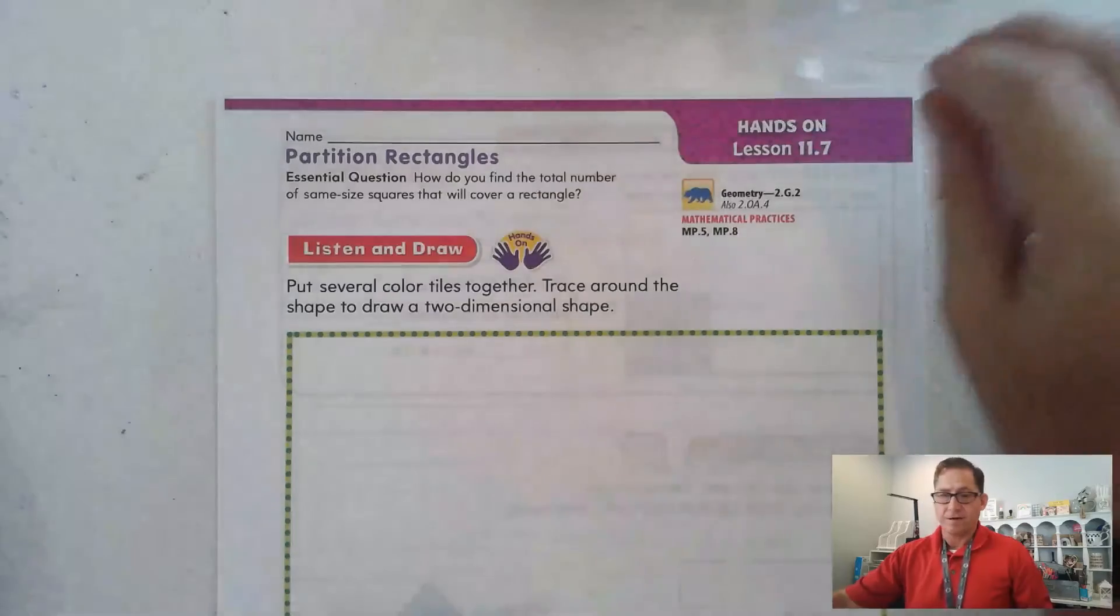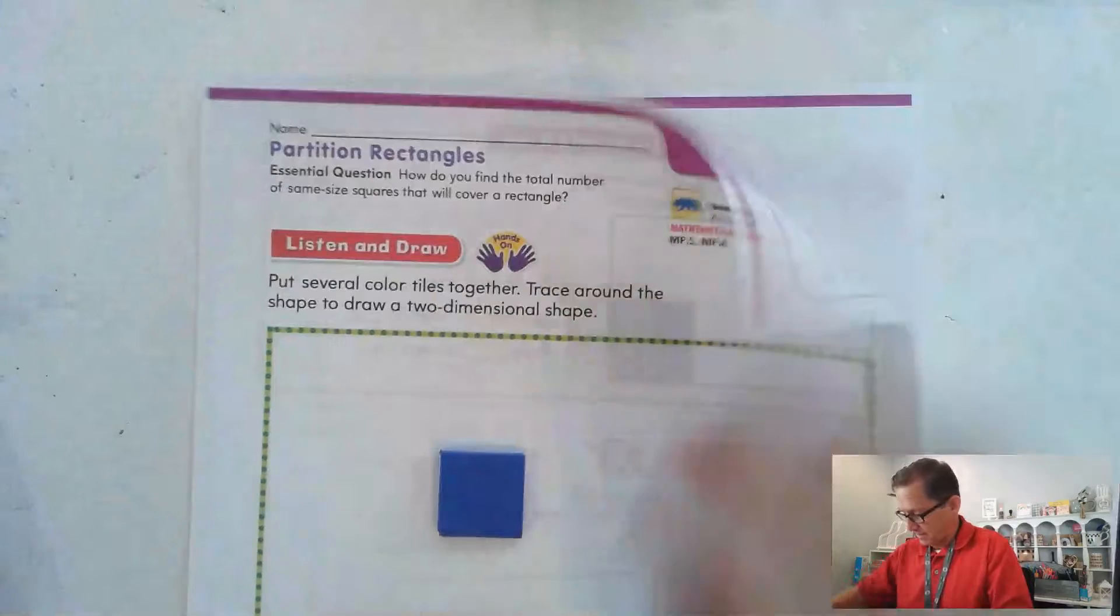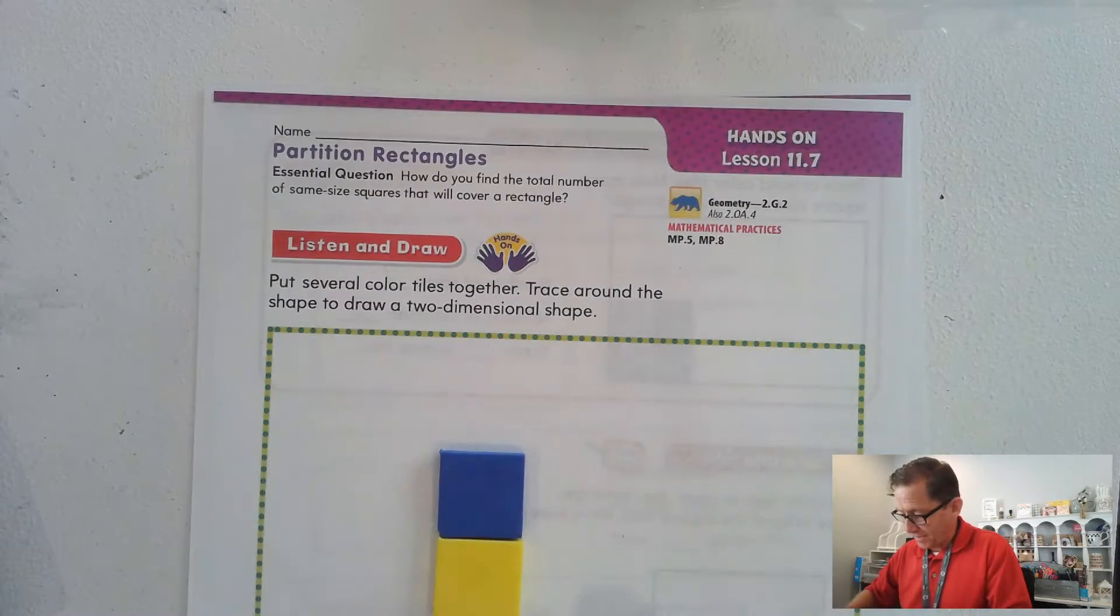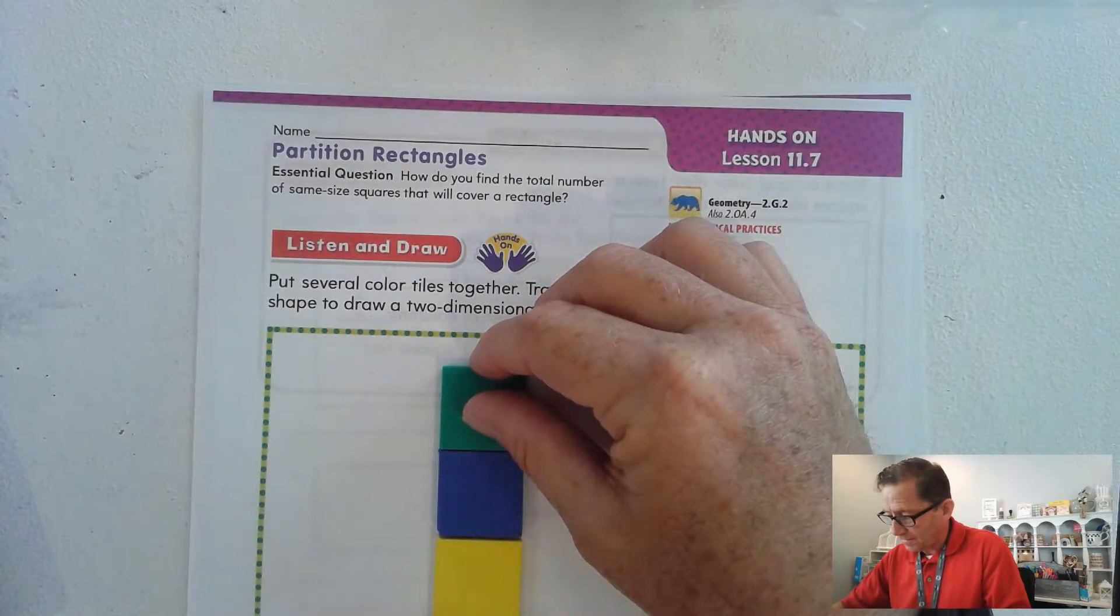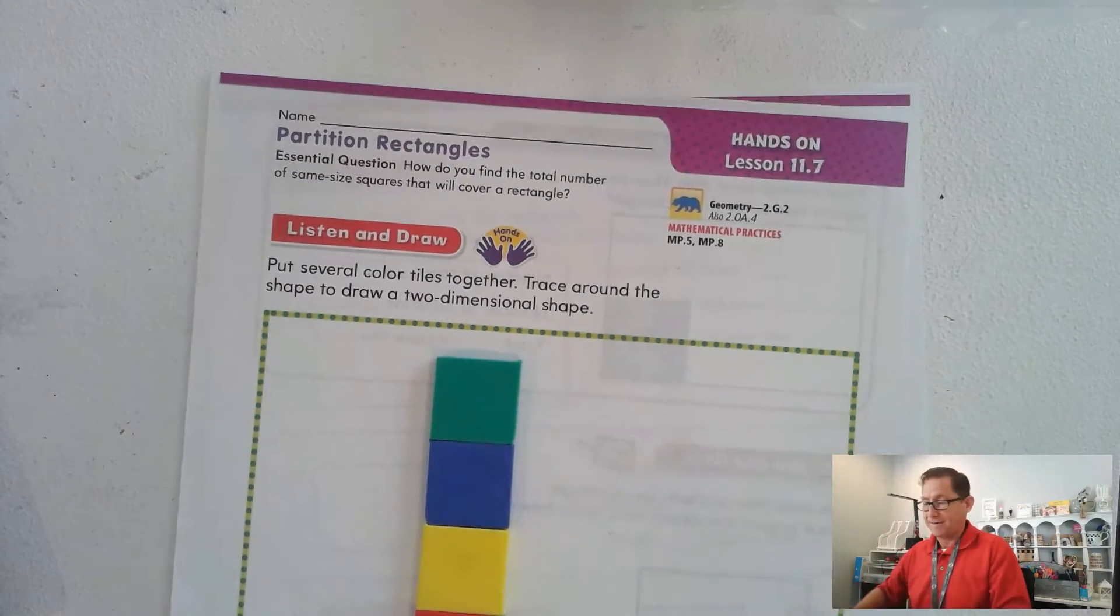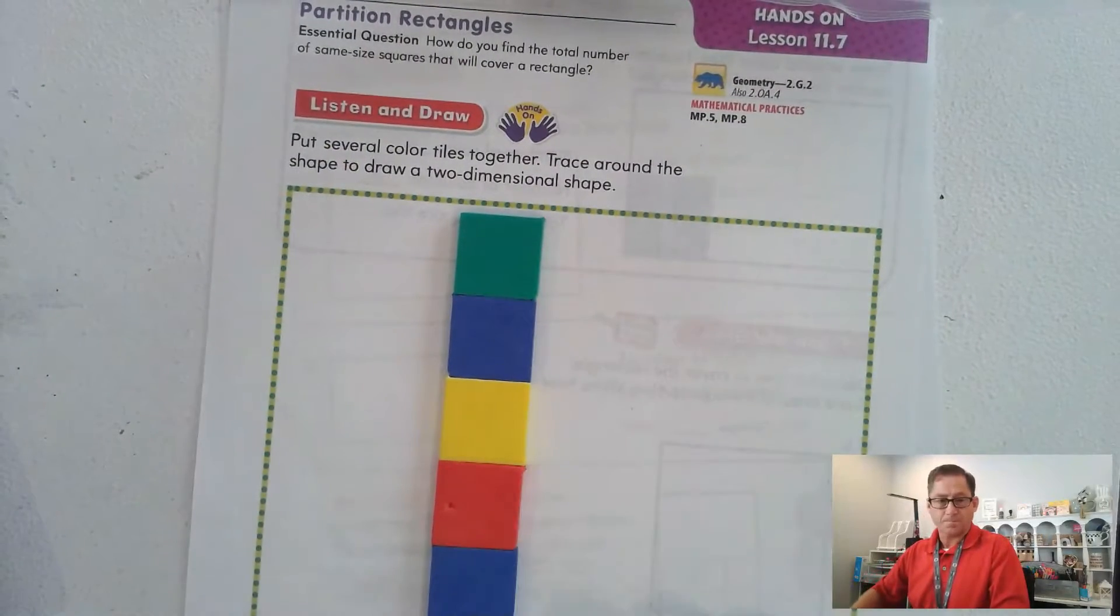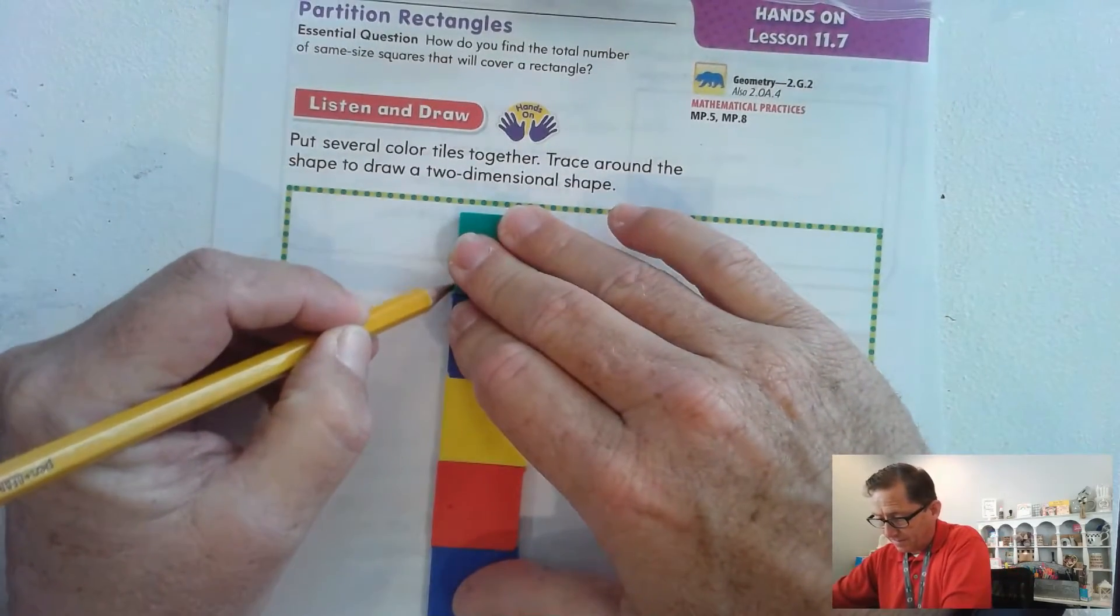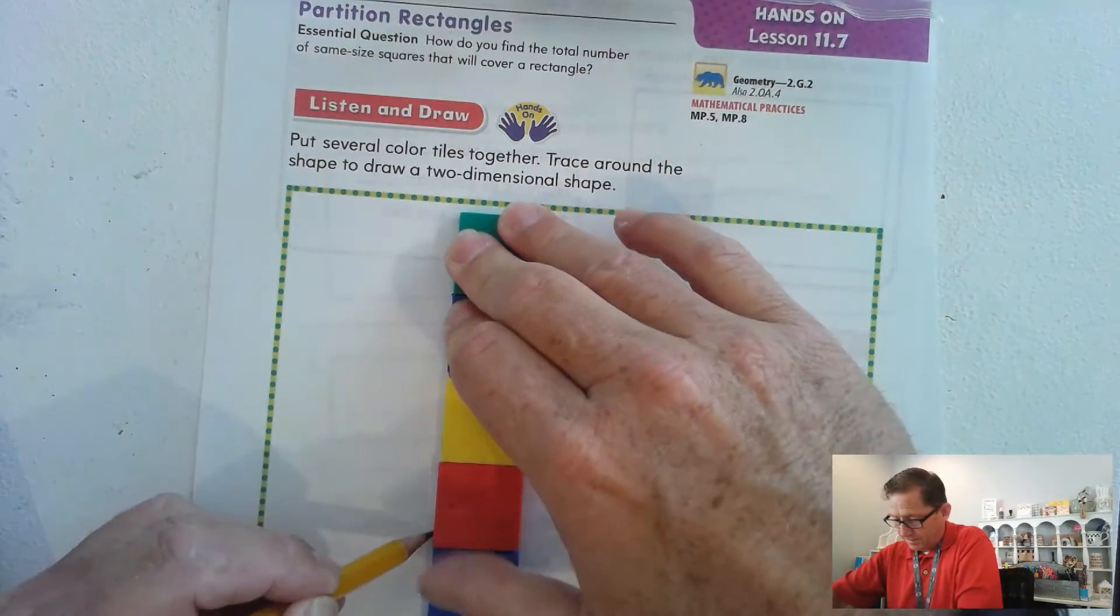So get your bag of colored tiles and take out several tiles. It looks like I'm going to use five. And I want you to trace around those after you make a shape. I think I'm just going to make a long rectangle. It doesn't matter what you make. So I have five rectangles, five colored tiles. I'm going to trace around them.